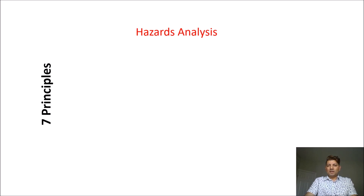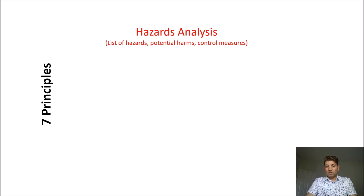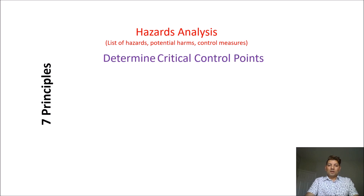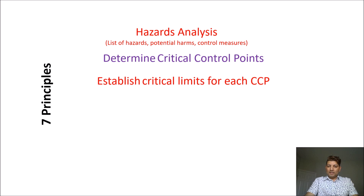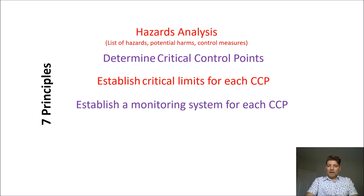The first HACCP principle is hazard analysis. Here you are listing all potential hazards, their potential harm, and all the control measures needed to control those hazards. Next, you will determine the Critical Control Points. Then you will define the Critical Control Limits. And for principle four, you need to establish a monitoring system for each CCP, including a monitoring method to control those CCPs.